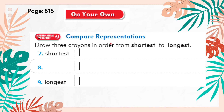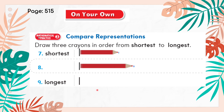On page 515, question: draw three crayons in order from shortest to longest. Because there are more than two items — three crayons — we use the terms shortest and longest. Shortest is the smallest, tiniest length, and longest is the greatest length. Start with the shortest crayon, then draw one that is longer than the shortest crayon, and finally the longest crayon, which is the biggest of the three.